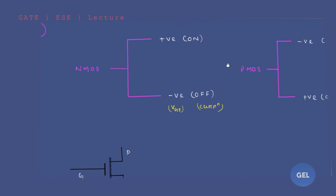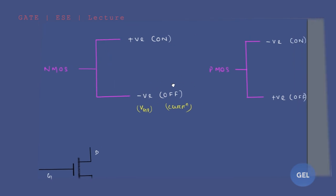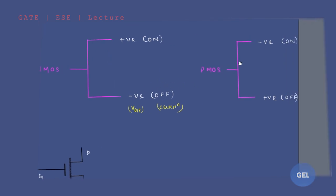For more negative values of VGS the device will be off. If the negative gate voltage is at an extreme value, you will get zero current.